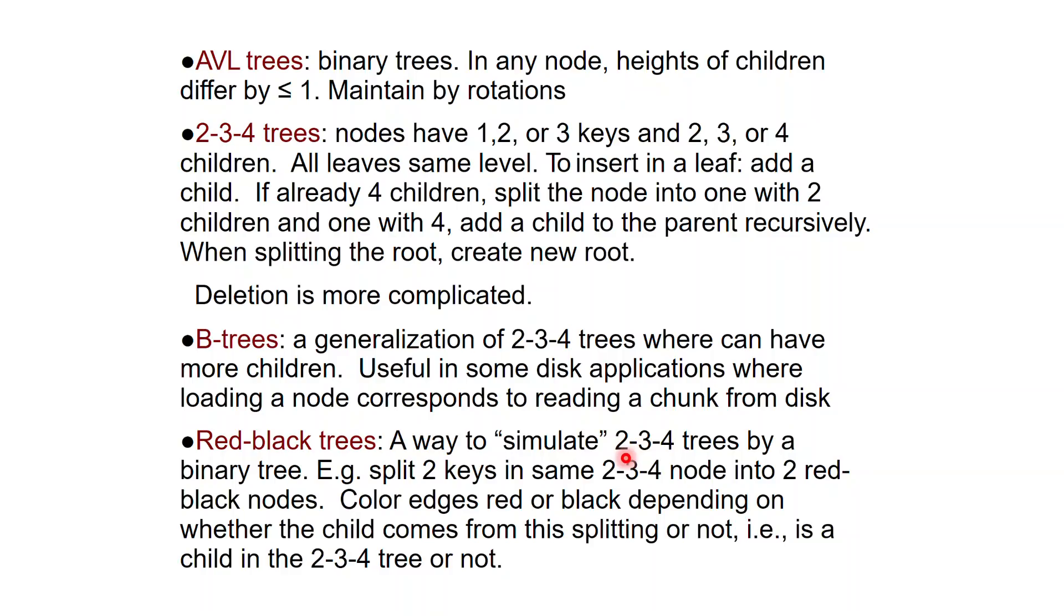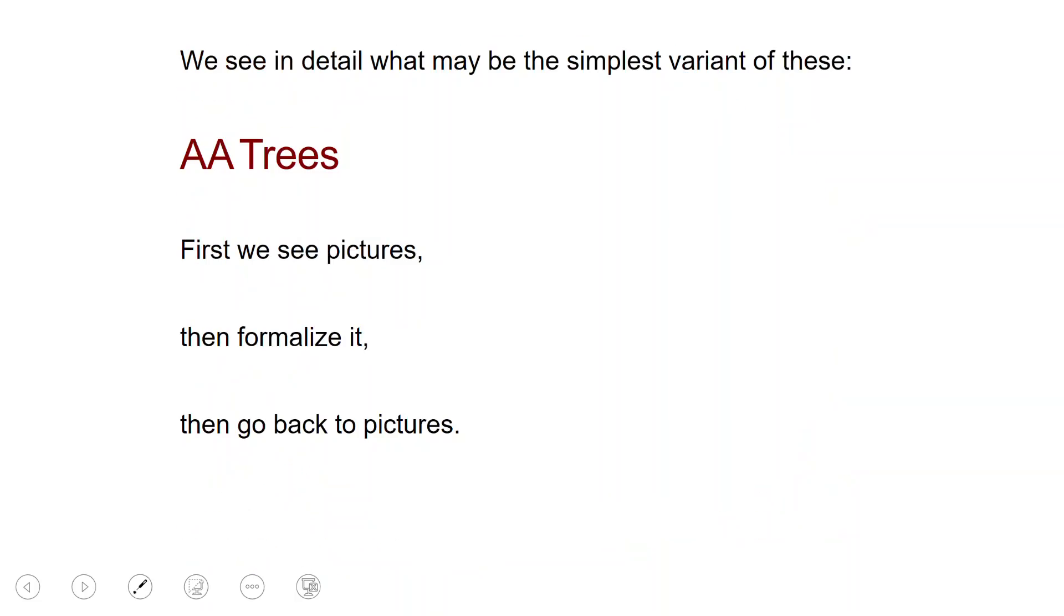So arguably all these things are somewhat complicated to understand and to program. There are many cases in all of them. Arguably the simplest variant of all these things is something which is known as AA trees, and this is what we're going to see in detail.